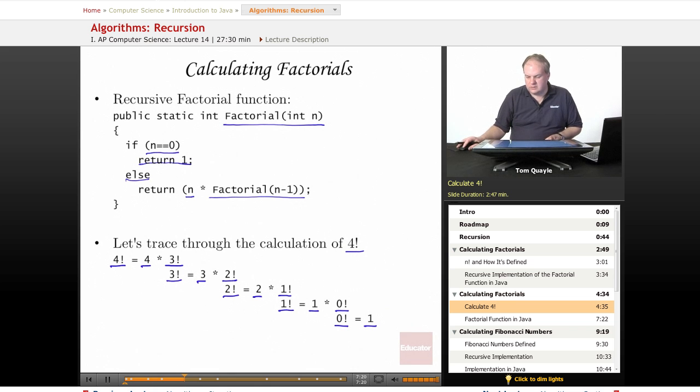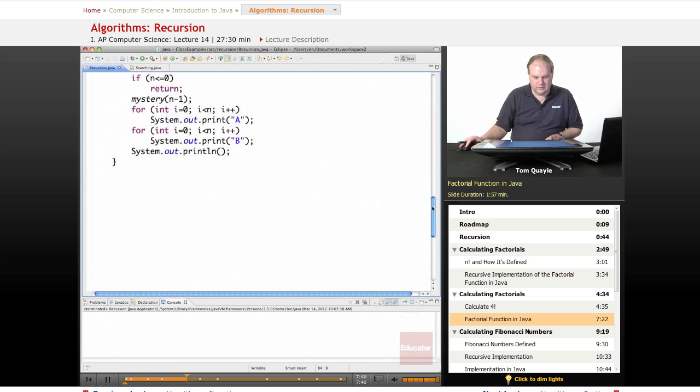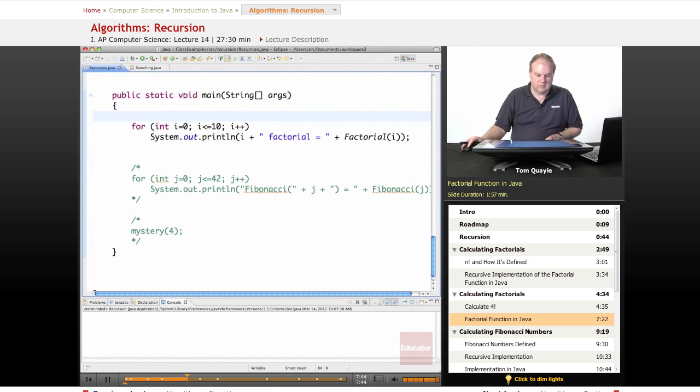Let's take a look at the factorial function in Java. Here is the same definition that we showed on the previous slide. Here's our base case, if n equals zero, return one, else return n times factorial minus one. So that's exactly the same code that we saw on the slide. I'm going to call the factorial function from my main method down here. And I just have a simple for loop that's going to go from i equals one to i equals ten. Normally, I use less than for the comparison in the for loop, but I do want to include ten, so I'm doing less than or equal ten, incrementing i, and I'm simply going to print i and then the words factorial equals and then call the factorial function using i to generate all the factorial numbers starting at zero and ending at ten.